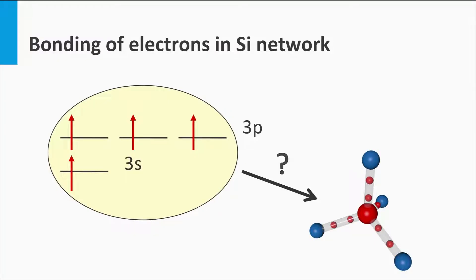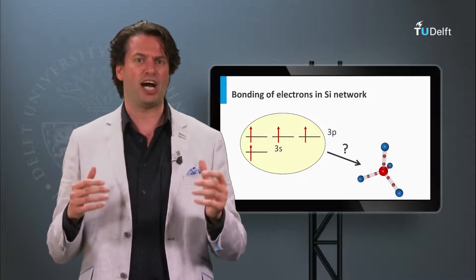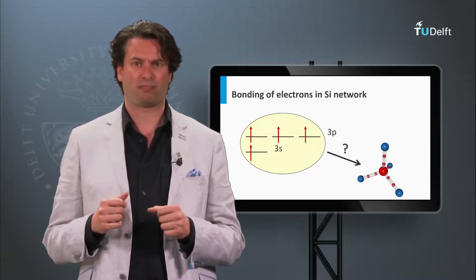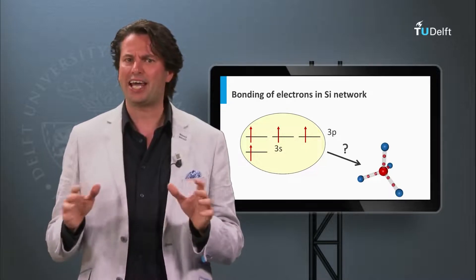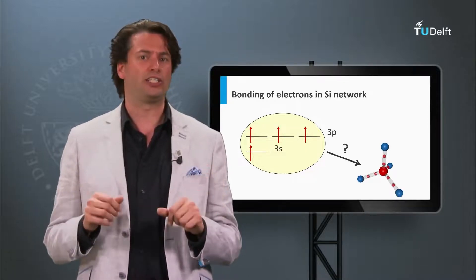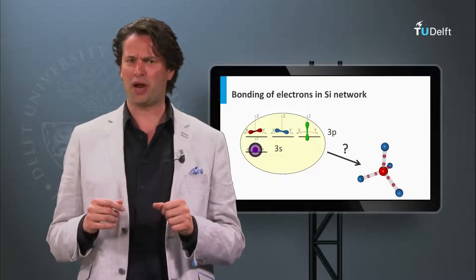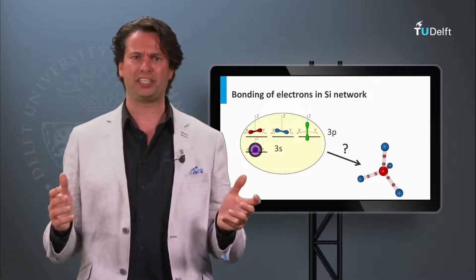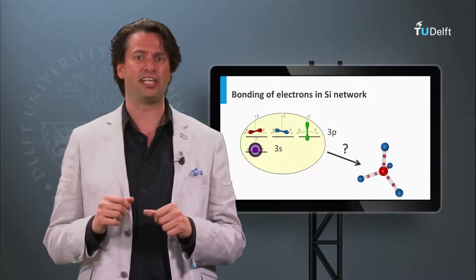From nature we know that the orientation of a silicon bond is tetrahedral-like. Consider the lattice of crystalline silicon, which is a diamond cubic crystalline lattice. Looking at a single atom in such a lattice, the angle between all four bonds is 109 degrees. However, if we look at the orbitals of the four valence electrons in the third shell of silicon, we don't recognize the tetrahedral coordination — their shapes do not match a tetrahedral coordination at all.